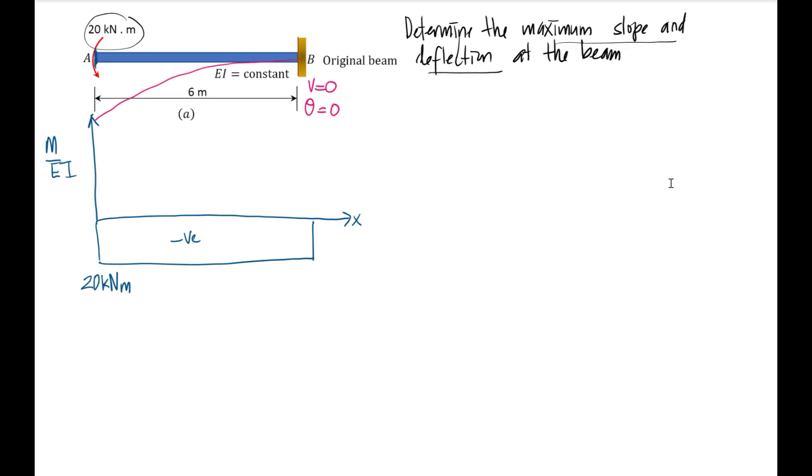Now we can proceed to define the maximum slope and deflection. As you can see from the figure here, we know that the maximum slope and deflection is at the end of the cantilever beam.